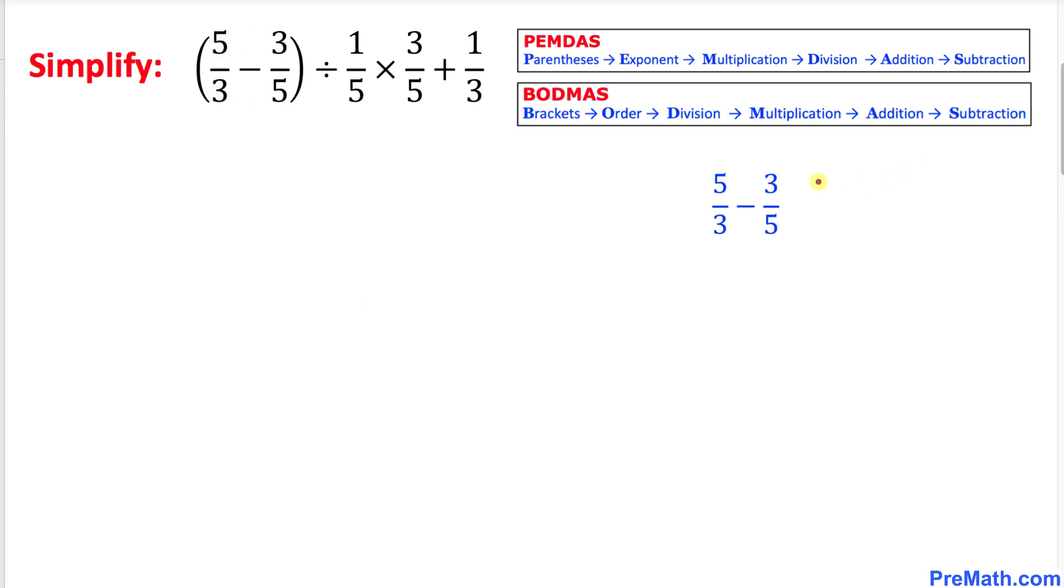Here I have copied down everything inside this bracket. Let me show you an easy way to simplify these fractions using the crisscross method. We're going to cross multiply: 5 times 5 is 25, and then with the minus sign, 3 times 3 is 9.